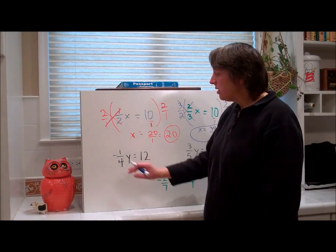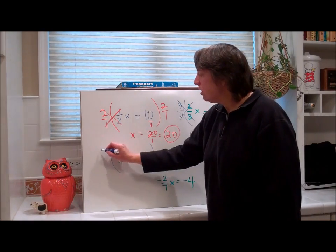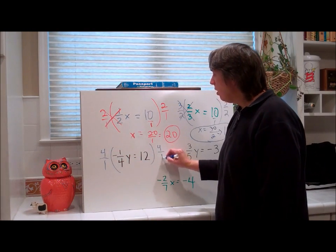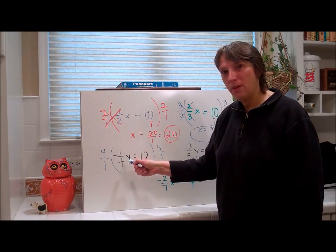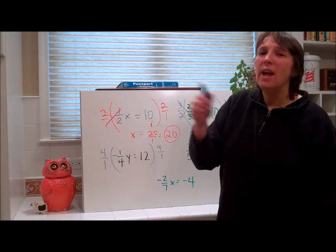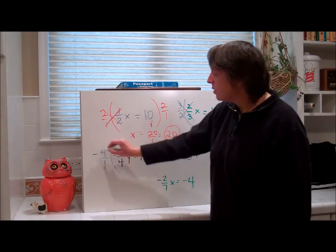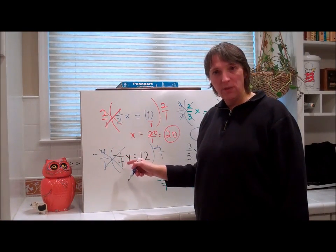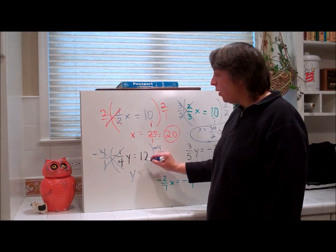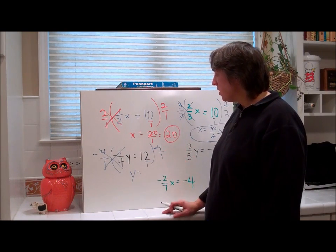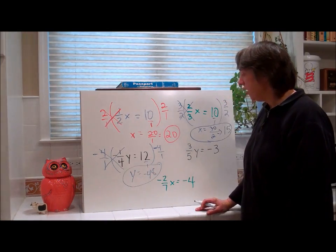Now we come over here — it's a fraction, a division equation. The inverse operation is to multiply by the reciprocal. It's a negative 1 fourth, so we're going to multiply by the reciprocal of negative 1 fourth, which is negative 4 over 1. Don't forget that, because we have to cancel the negative number. We take the reciprocal of the negative number. Bring down y, and this is 12 over 1. So 12 times negative 4 is negative 48.